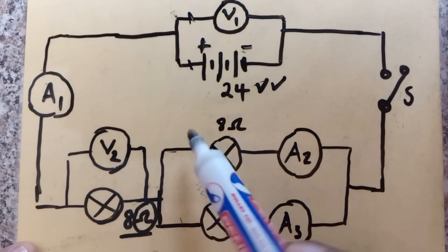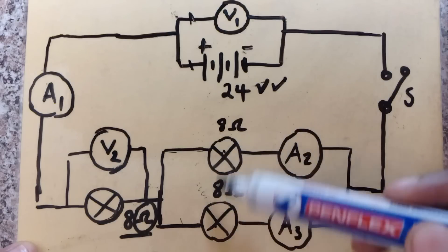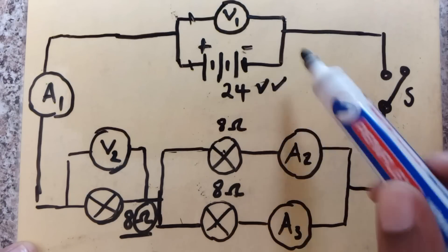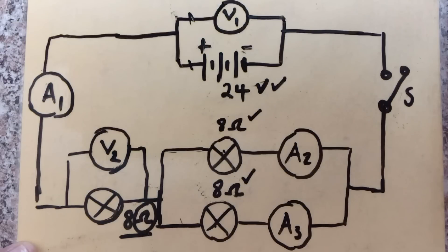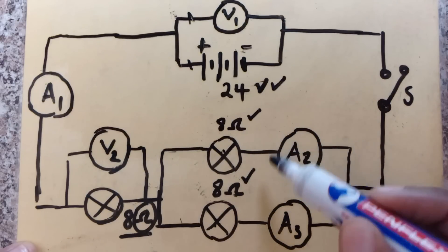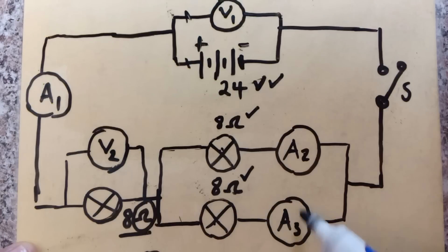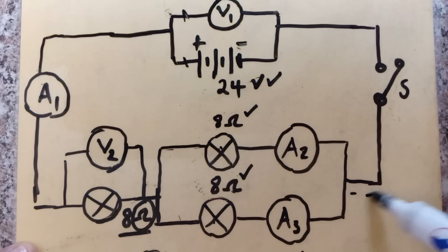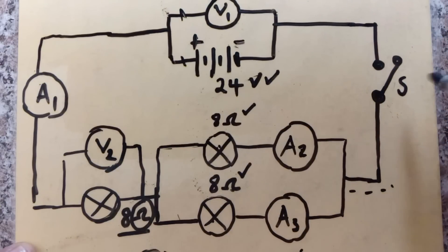Moving along, we have two light bulbs connected in parallel to each other. The first has a resistance of 8 ohms and the second also has a resistance of 8 ohms. On the same branch as the first 8-ohm resistor is ammeter A2, and on the other branch next to the second light bulb is ammeter A3. Further along there is a switch, labelled S.